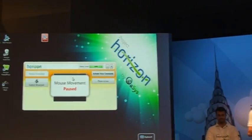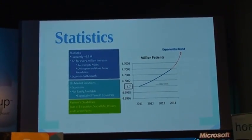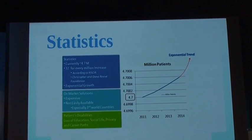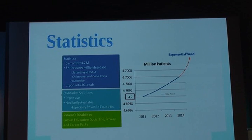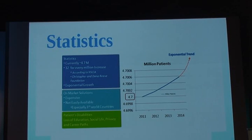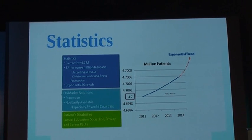Statistics: there are 4.7 million people currently worldwide with quadriplegia, with 32 new people for every million per year. It's exponential growth — it's not small, it's growing fast. What's on the market is not enough to close the gap. Devices are expensive and not easily available; devices that allow people to actually use a PC barely exist.